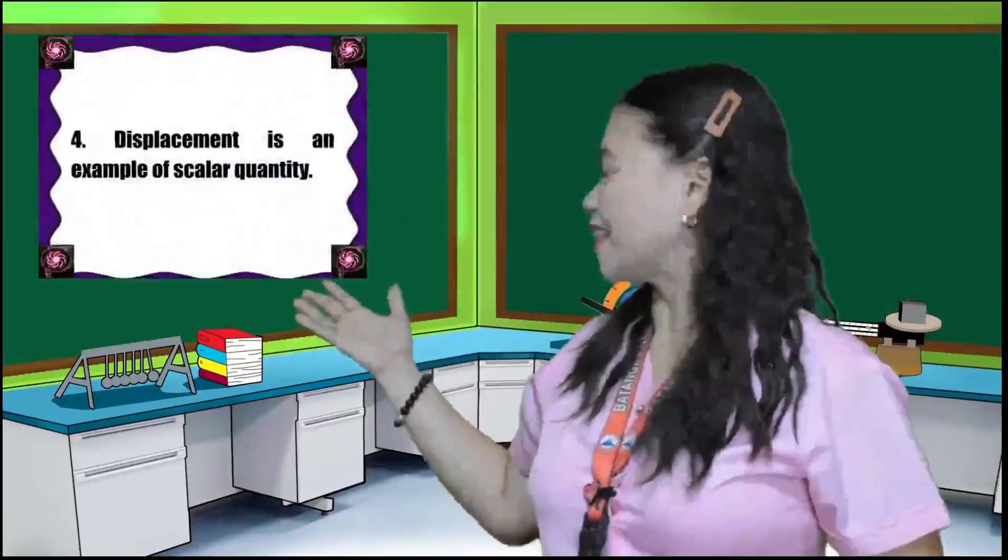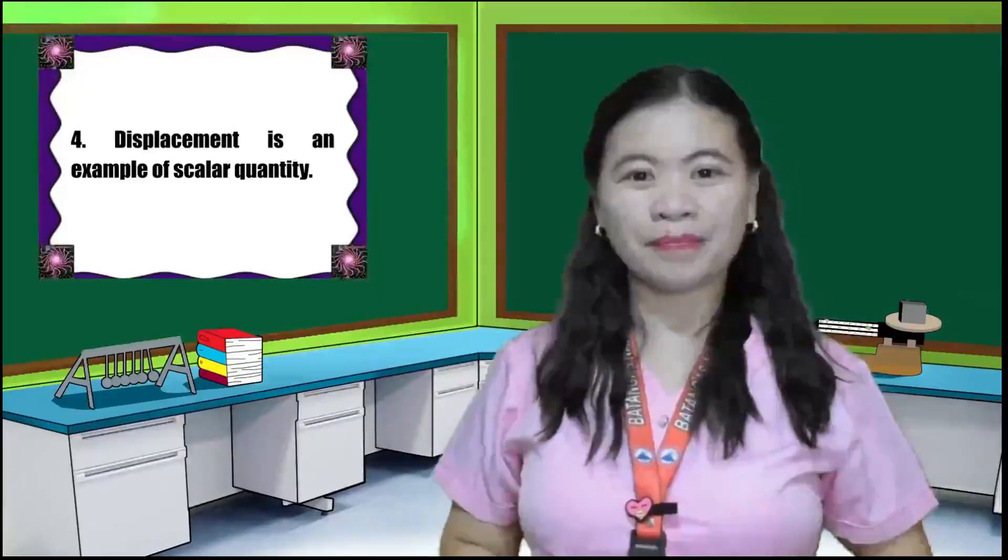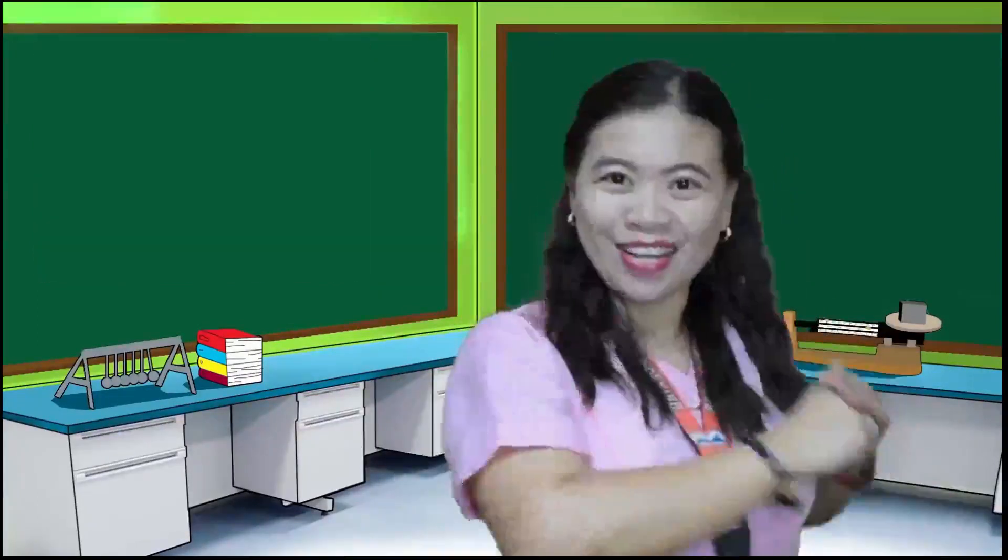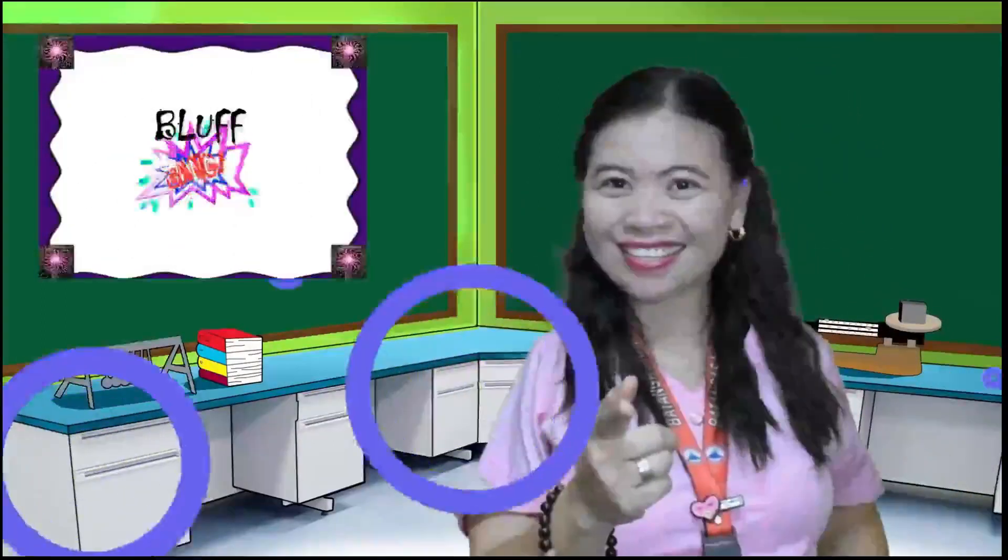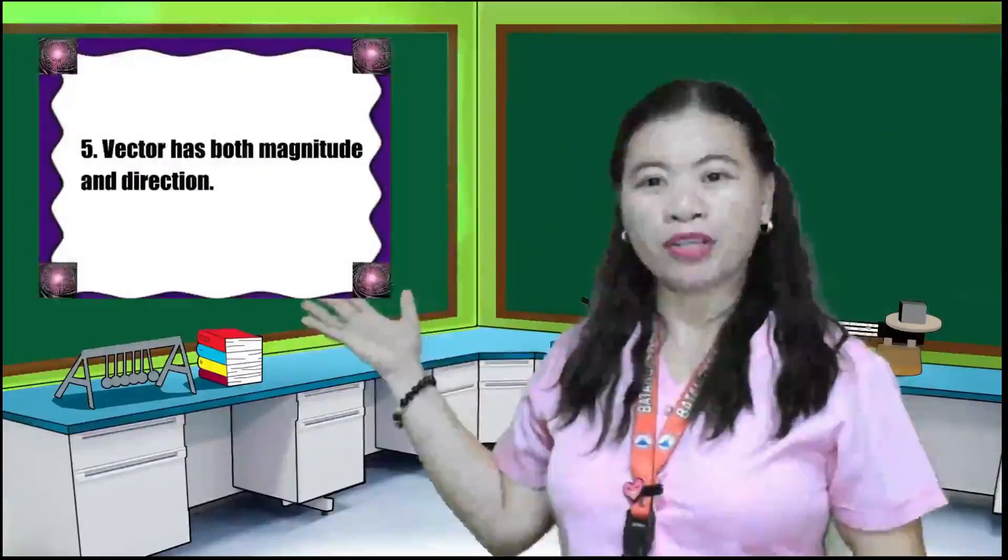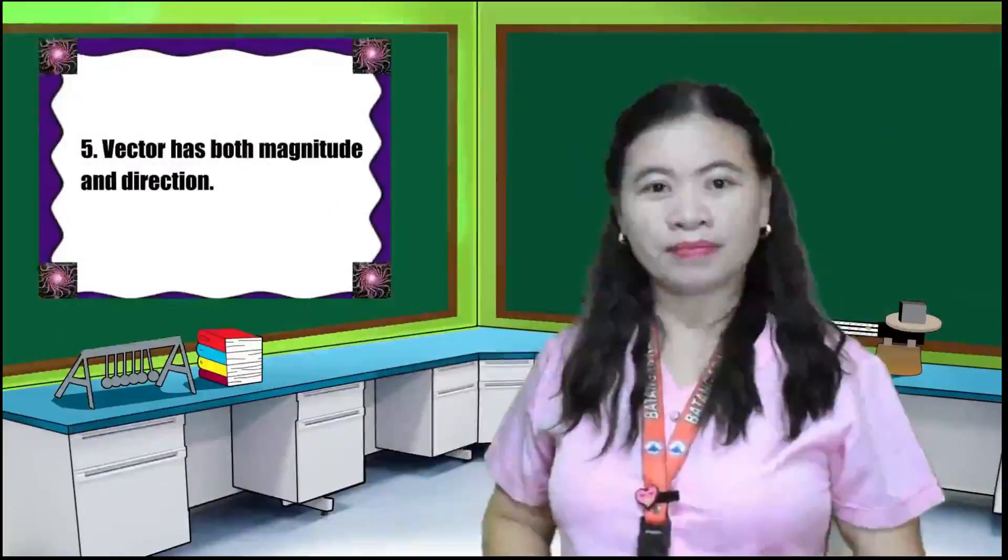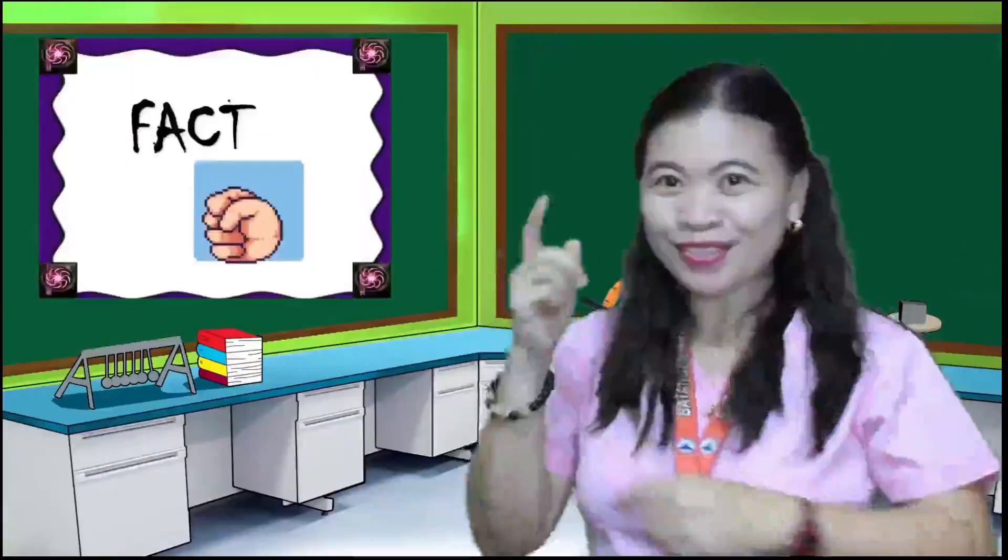Number four. Displacement is an example of scalar quantity. Is it a fact or bluff? Correct. Number five. Vector has both magnitude and direction. Is it a fact or bluff? Correct.